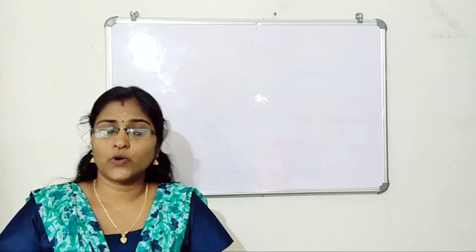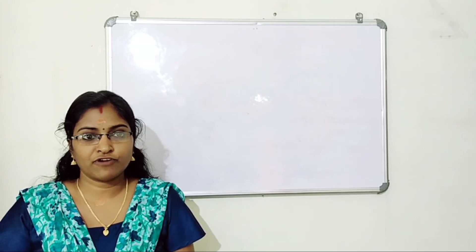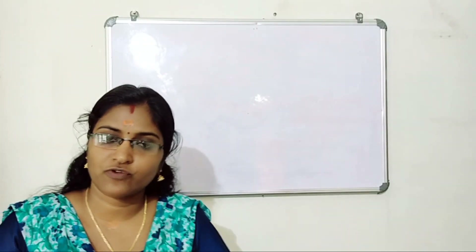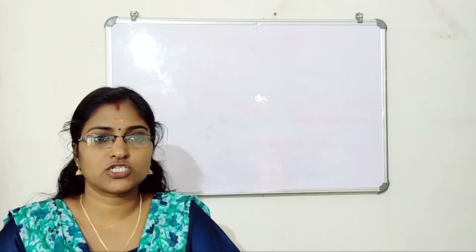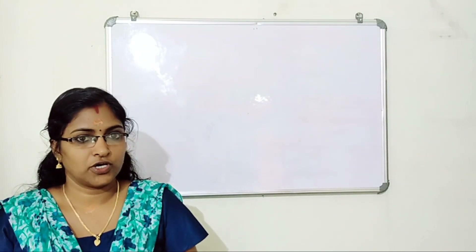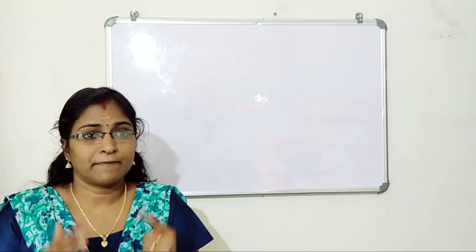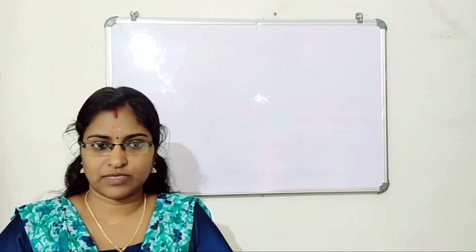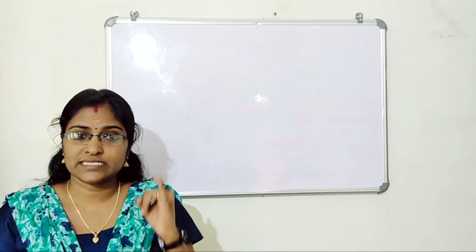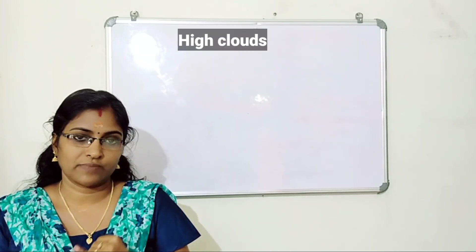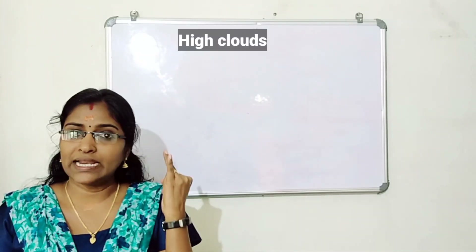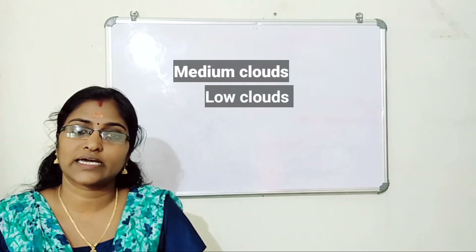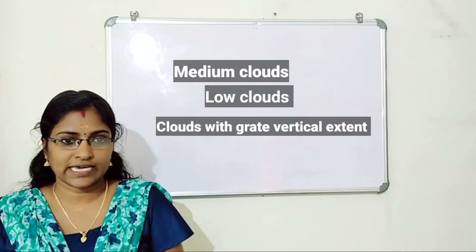Clouds usually occur at different altitudes. Based on altitude, there are four types: high cloud, medium cloud, low cloud, and clouds with great vertical extent.